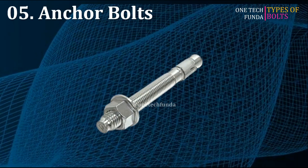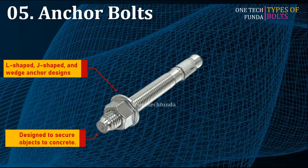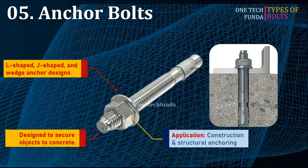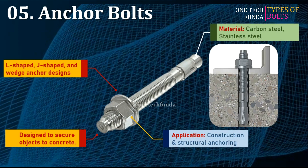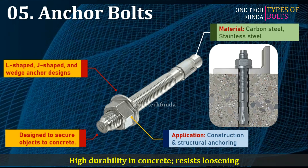Anchor bolts are designed to secure objects to concrete, available in L-shaped, J-shaped, and wedge anchor designs. Used in construction and structural anchoring. Materials include stainless steel and carbon steel. The main advantage is high durability in concrete and resistance to loosening.